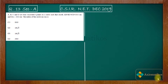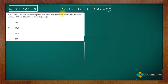Hello dear students, welcome to Axiomatic Course. This video is part of the solution series for CSIR NET December 2019. We are here with Problem 13, which is a general aptitude problem. Points A, B, C, D are four consecutive points on a circle such that chords AB, BC, and CD equal 10, and DA equals 20. We have to find the radius of the circle.